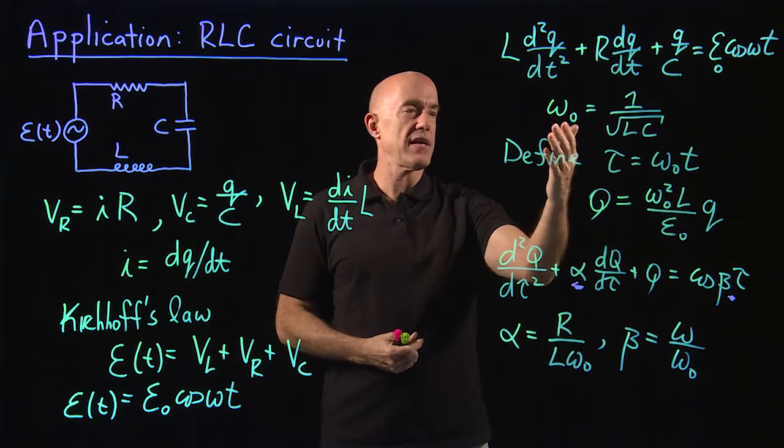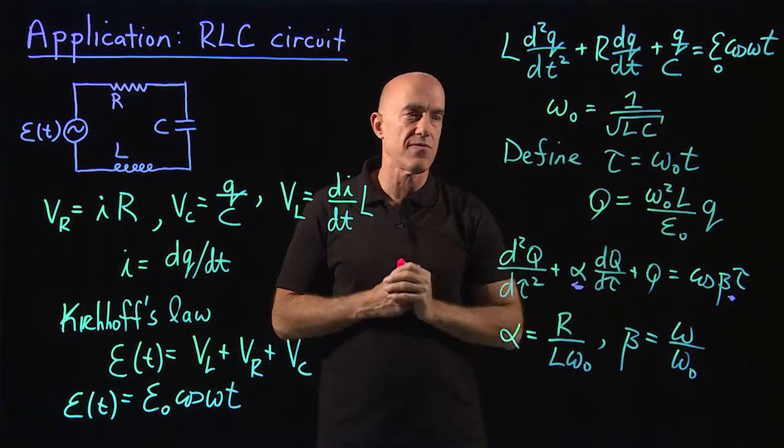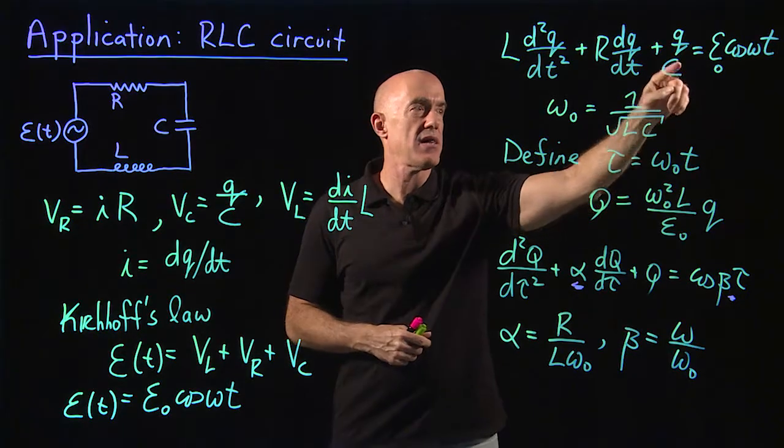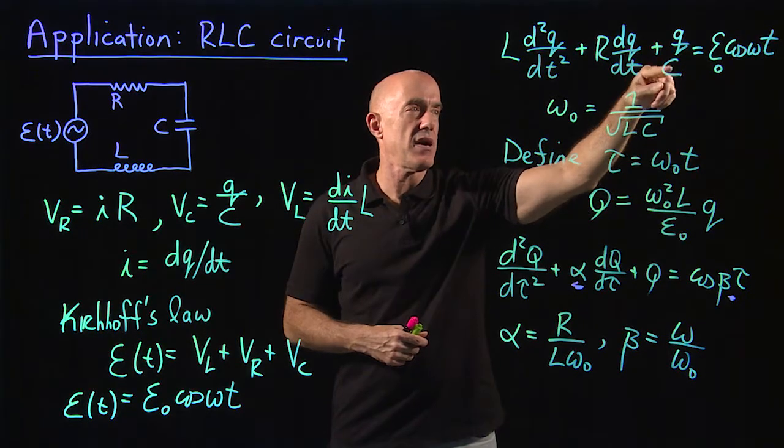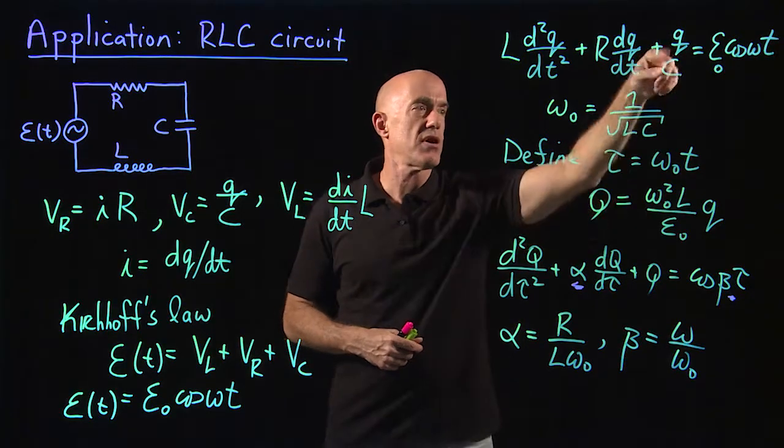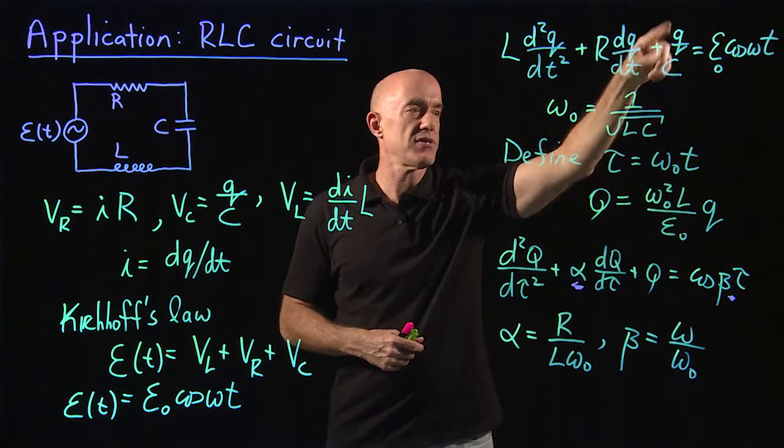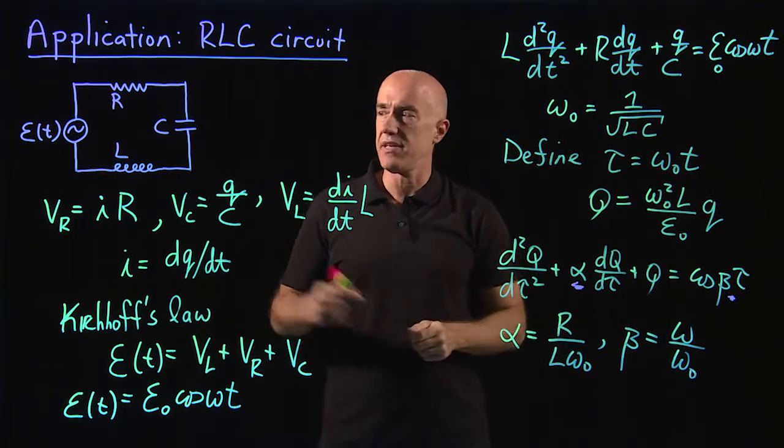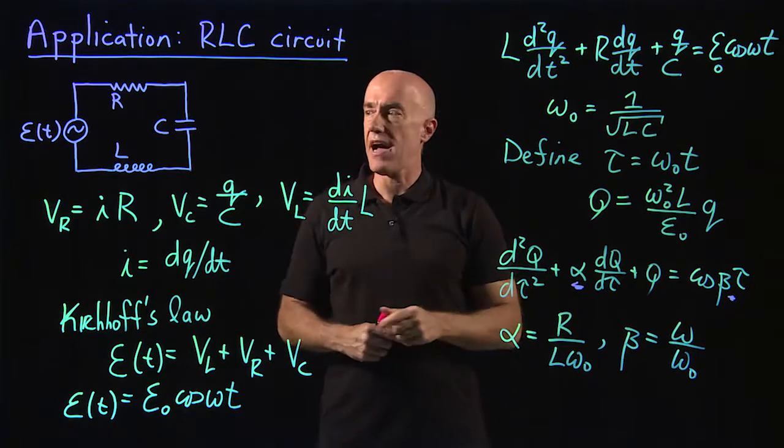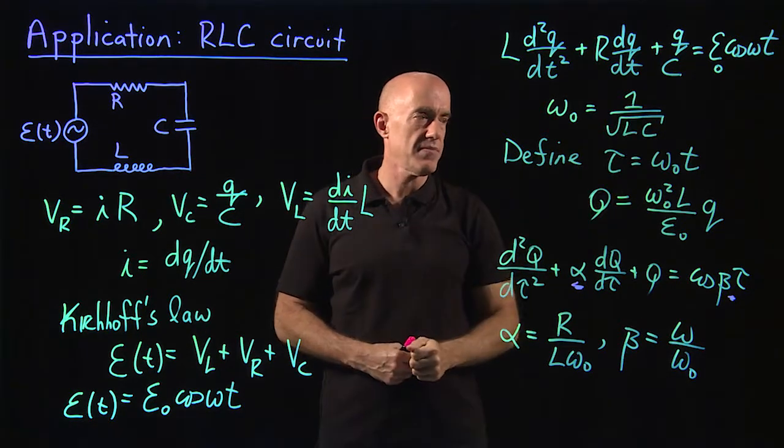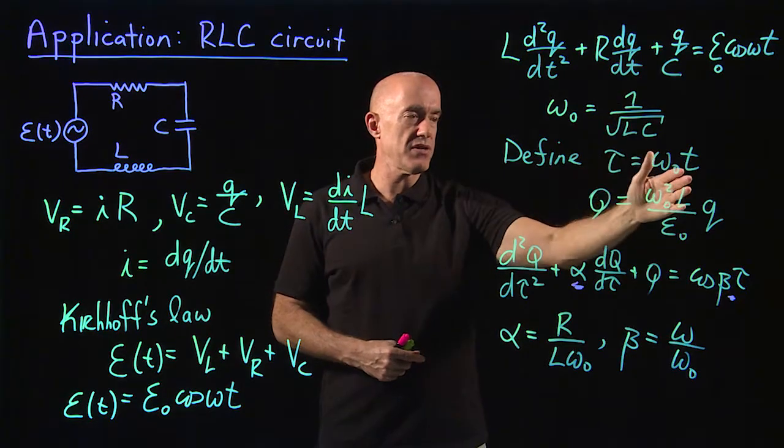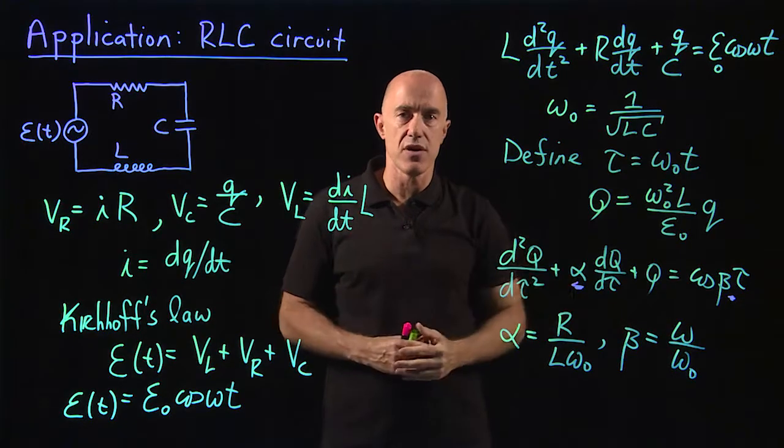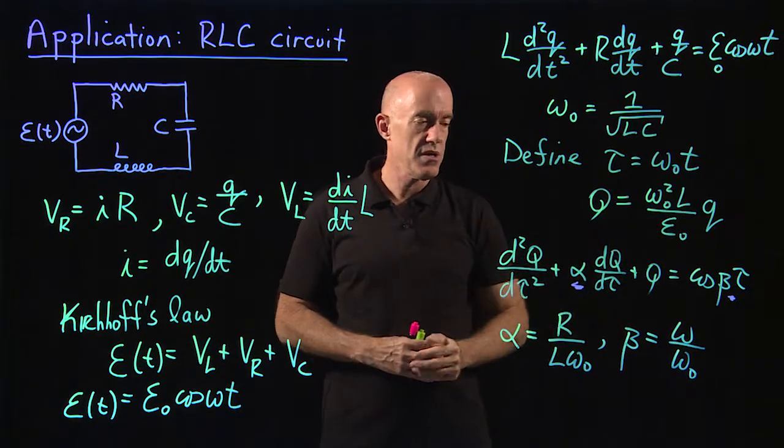We want to define something, a parameter that has units of one over time. We can do that by picking, by dividing through by L and picking up the 1 over LC times the Q term. 1 over LC is our ω₀². So we can define the natural frequency of this circuit without a resistor is 1 over root LC. Make a non-dimensional time, a non-dimensional charge, and we end up with this second order differential equation with two parameters.